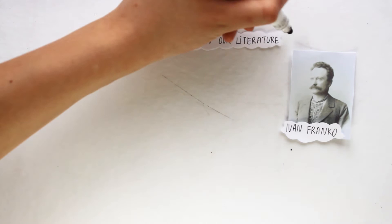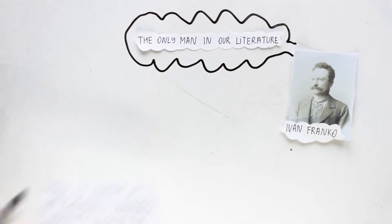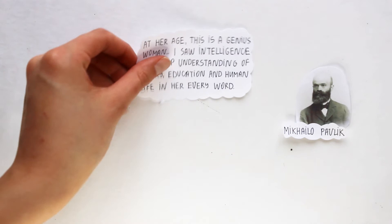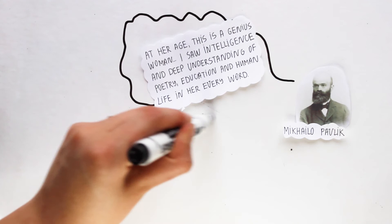Surprisingly, Ivan Franco called the painful and fragile Lesya the only man in our literature. He also said from the moment of Shevchenko's 'come on, get up, tear up kaidane,' Ukraine has not heard such a strong, hot and poetic word as of this weak, sick girl. At her age, this is a genius woman. I saw intelligence and deep understanding of poetry, education and human life in her every word, said Michailo Pavlik about her.